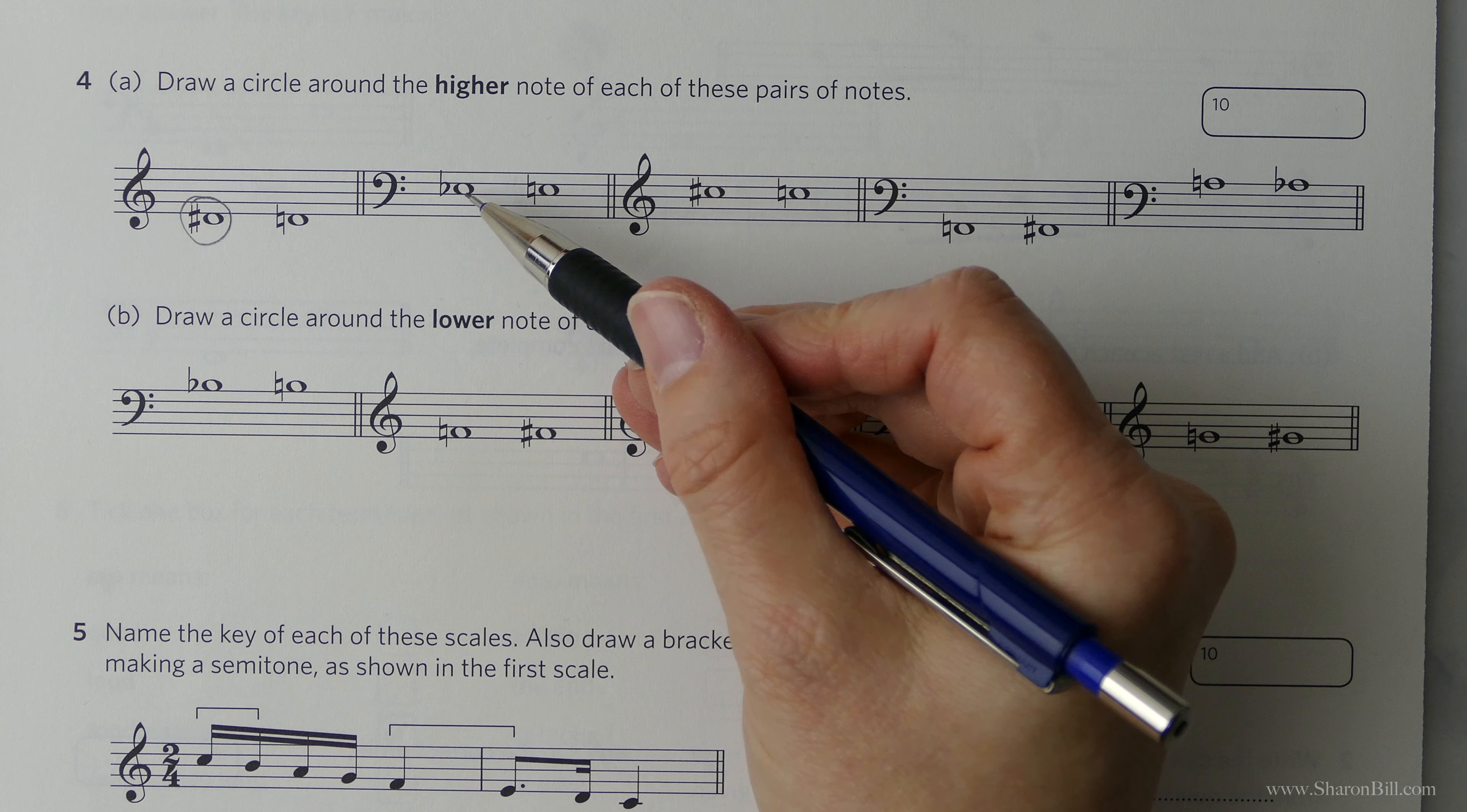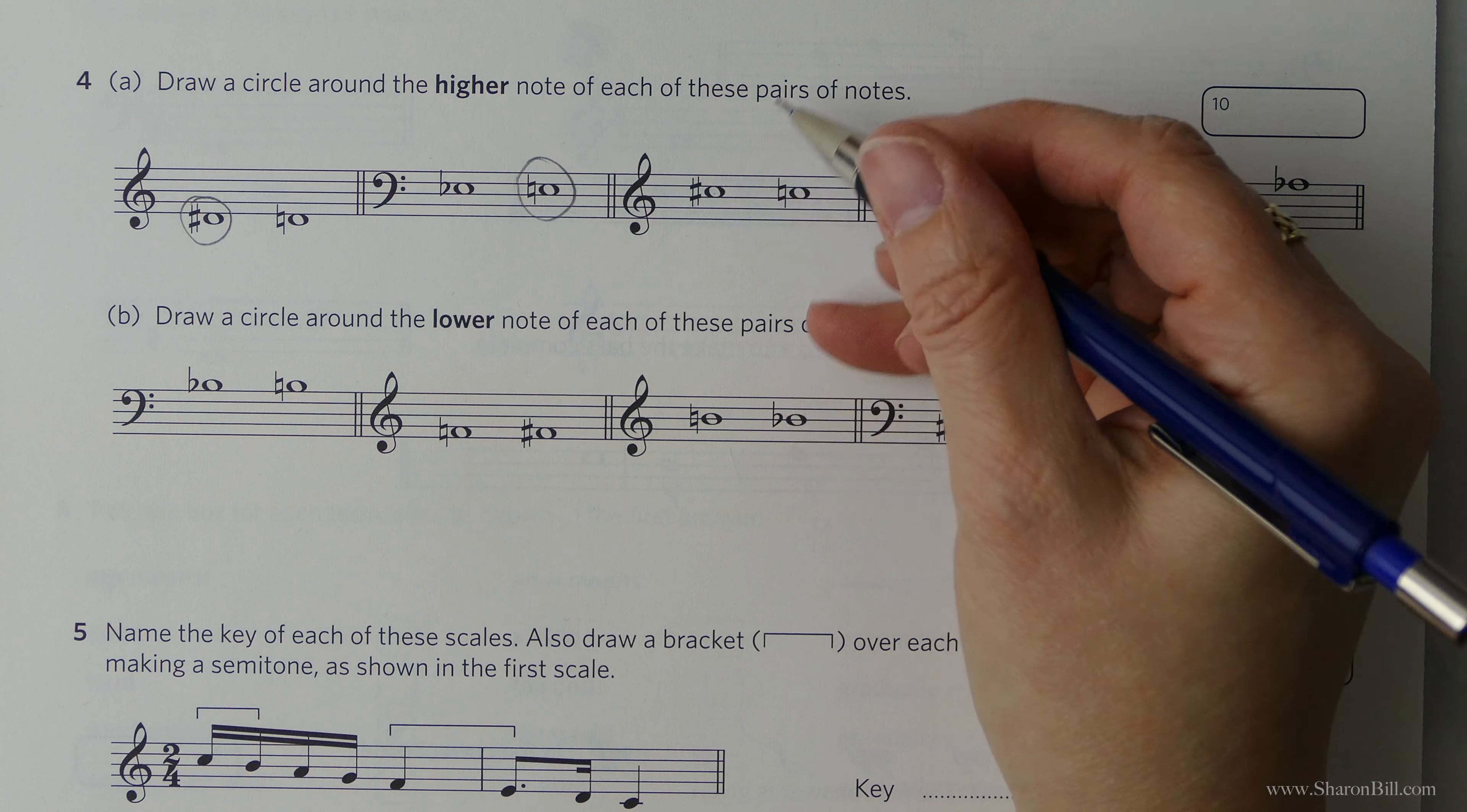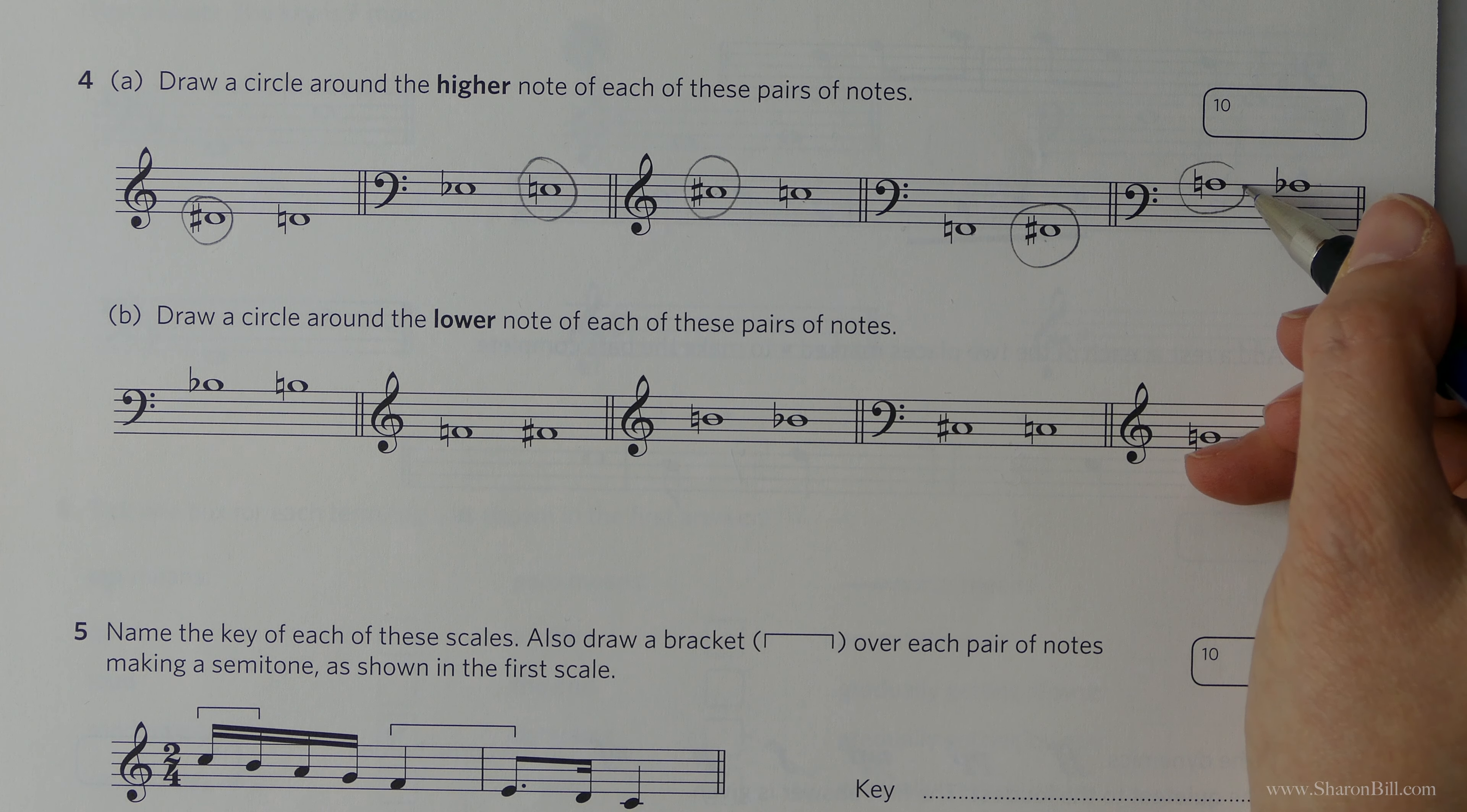We know that a flat lowers by a semitone. So we have an E flat and an E natural. In bass clef, E flat, E natural. A flat lowers by a semitone. And so the natural must be the higher of the pair. So here we have a C sharp and a C natural. We know that a sharp raises by a semitone. And so C sharp is a semitone higher than C natural. We have the same scenario here in the bass clef going from F natural to F sharp. We know that a sharp raises by a semitone. And so that's the higher of the pair. And then here we're in the bass clef. We have an A natural and an A flat. We know that a flat lowers by a semitone. Therefore the natural is the higher of the two.